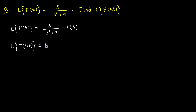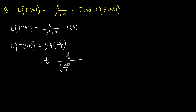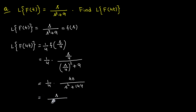Applying the formula L{f(4t)} = (1/4) F(s/4) = (1/4) · (s/4) / ((s/4)²+9). Simplifying: (1/4) · (s/4) / (s²/16 + 9) = 4s / (s²+144). The 4 cancels in the numerator, giving the answer: s/(s²+144).